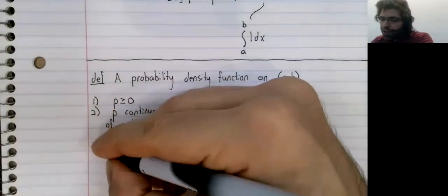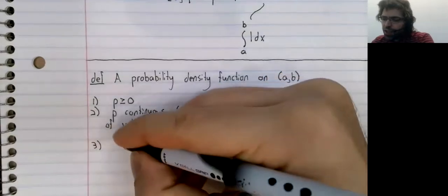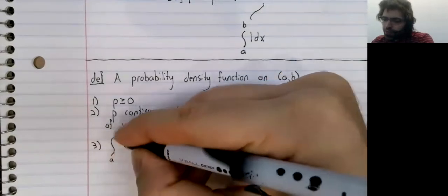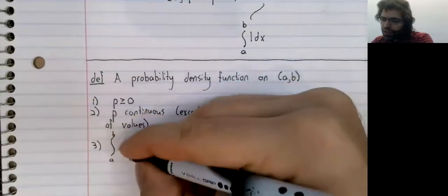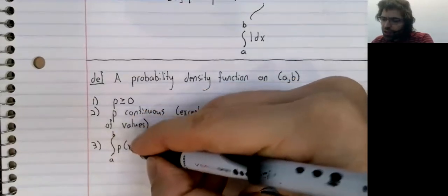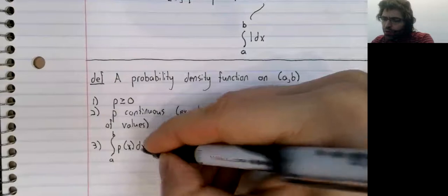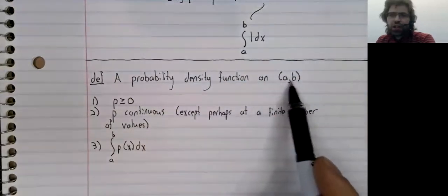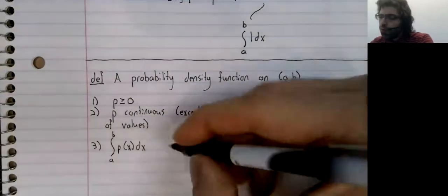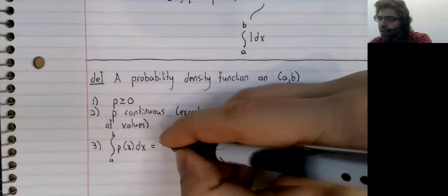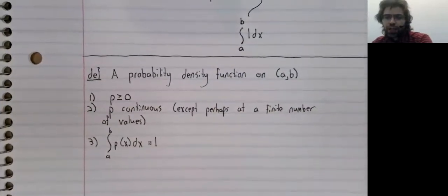Finally, the integral of a probability density function over the entire interval has to be one.